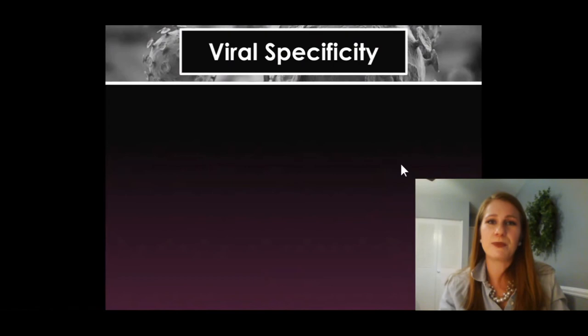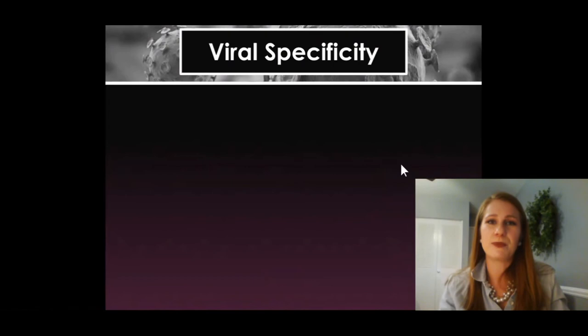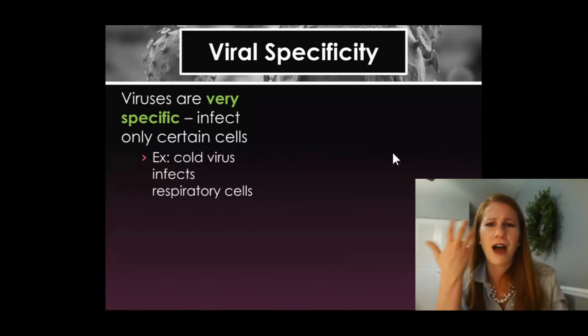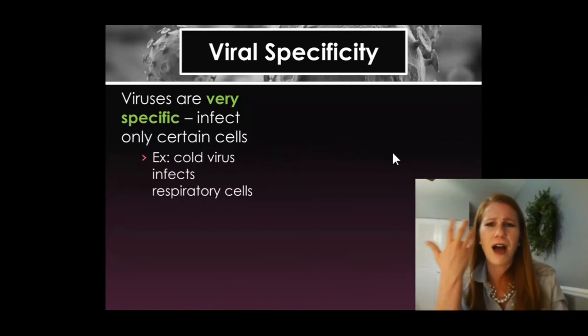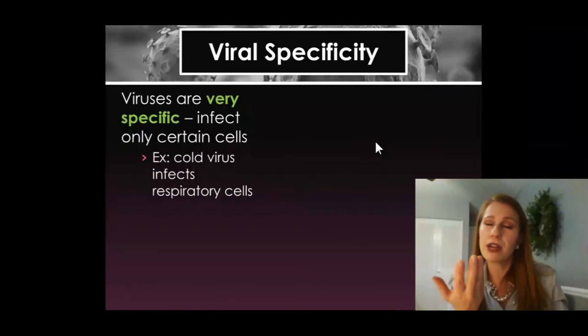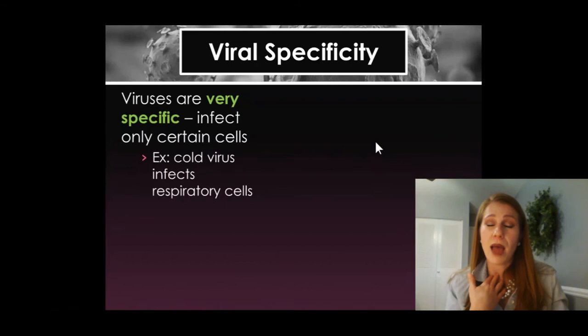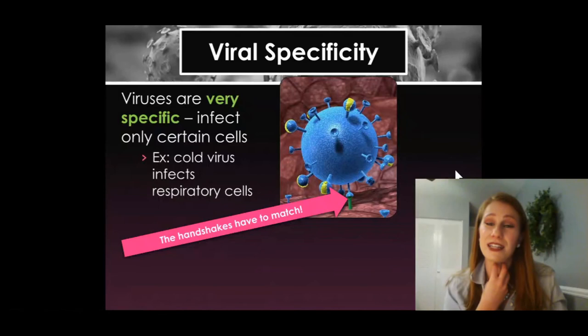Viruses are incredibly specific — they're only going to infect certain cells. This is kind of the reason why you don't get a cold and your eyes don't turn red. The cold virus infects your respiratory cells. When you breathe it in or somebody sneezes in your face, you get those cold viruses in your respiratory tract — your nose, your mouth, your throat. Because the glycoproteins there match, you get those cells infected, which is why you get a cough, a runny nose, or a scratchy throat, because those cells are the ones that are dying when the viruses break out.